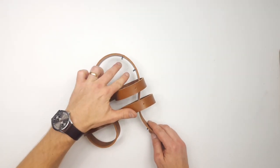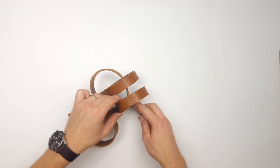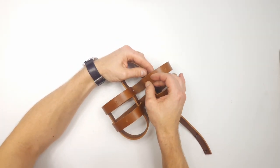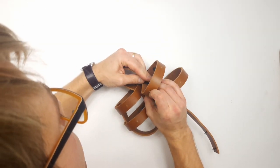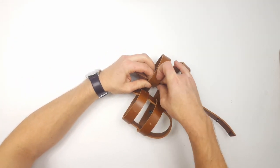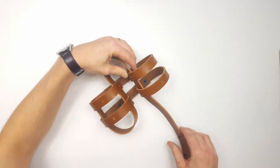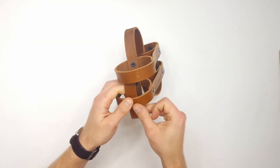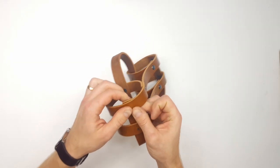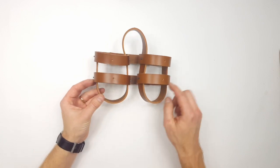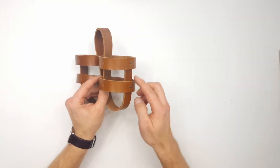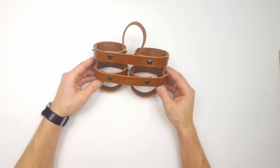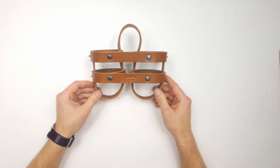Pull this through so that we have these two rivets going into these two holes like so. And there we go. And the final piece going in like this. And there we go. Now we can just take these rivets and close them up. And then we have one side of the beer carrier. There we go.